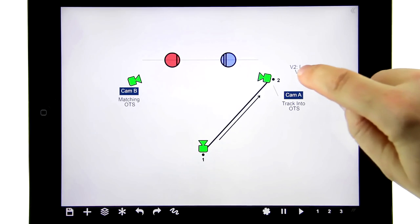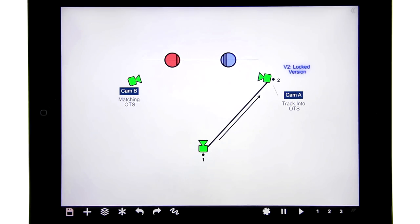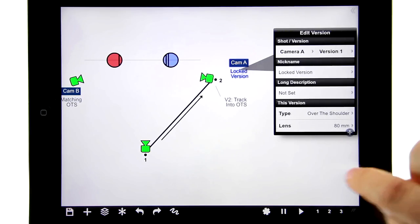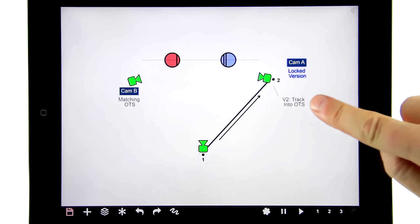So that's important to understand—each of these labels here is just a version. I can even change the version numbers here, so I'm going to change this one into being version number one, and then suddenly this one is the main shot and this one's the alternative.